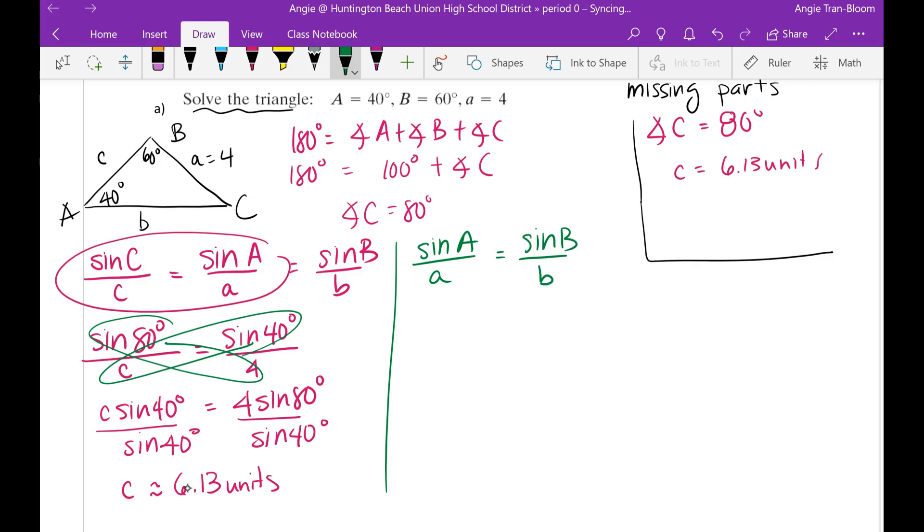Now I still need to find my B, so I'm going to use the exact given parts, which is A. Then find sine of B over leg B. You never want to use the rounded one because that means you're just further away from the exact. So sine of A is 40 degrees all over little a, which is 4 units, equals to sine of B is 60 degrees all over leg B. And again, cross-multiply.